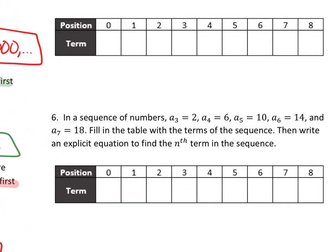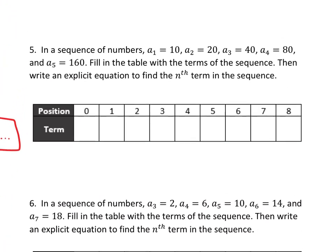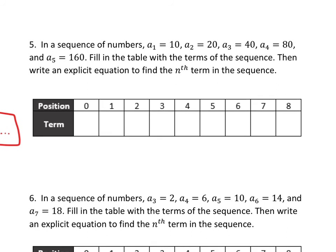If we look at numbers 5, 6, and 7, these questions are a little bit different because we're actually going to be writing an explicit equation. The first couple have some training wheels to help you understand how to think through this process, but then we'll be able to do it without the training wheels of this table.